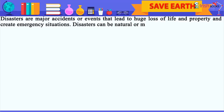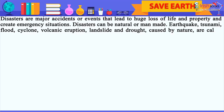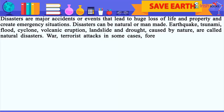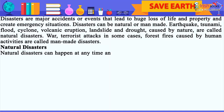Disasters can be natural or man-made. Earthquake, tsunami, flood, cyclone, volcanic eruption, landslide, and drought — caused by nature — are called natural disasters. War, terrorist attacks, and in some cases forest fires caused by human activities are called man-made disasters.